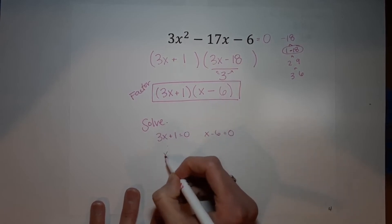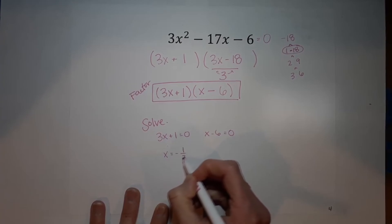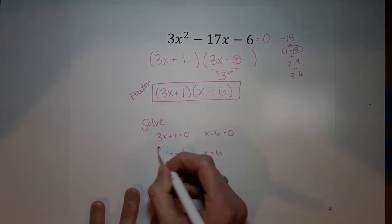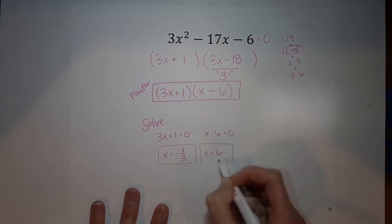Which will give you x equals negative one third and x equals six. All right, and that is that. Hopefully you can get your homework done and go to bed and have dreams of math that are nightmares.